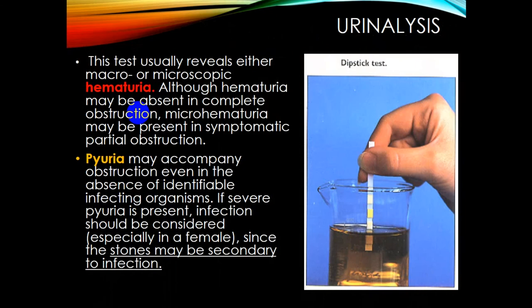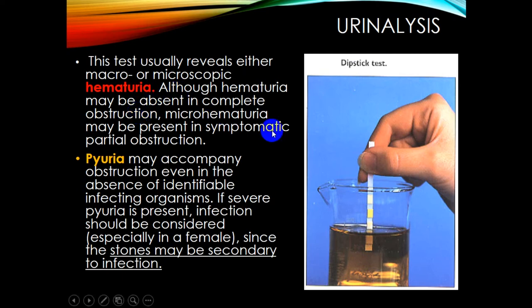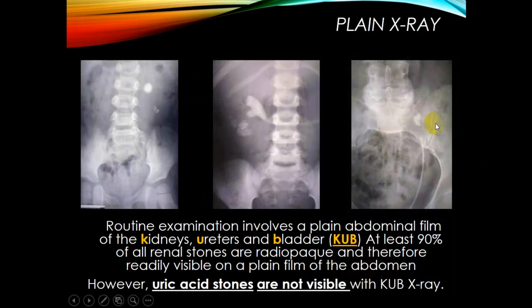Urinalysis usually reveals either macro or microscopic hematuria — the presence of erythrocytes in the urine. Hematuria may be absent in complete obstruction, or microhematuria may be present in symptomatic partial obstruction. An increased amount of leukocytes in urine may accompany obstruction even in the absence of an identifiable infecting organism. If severe pyuria is present, infection should be considered. In females, because the urethra is short, spread of microorganisms is more common, and the stone may be secondary to infection.